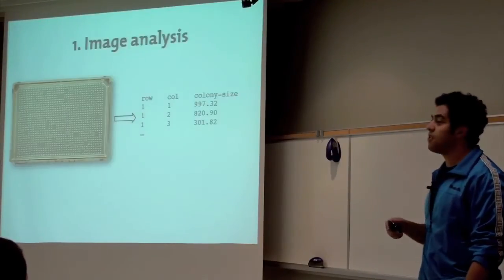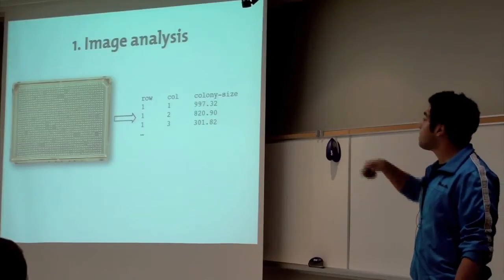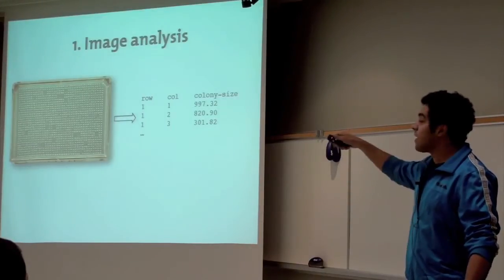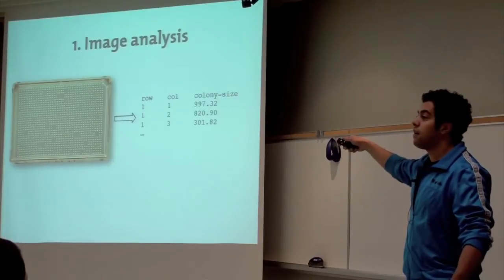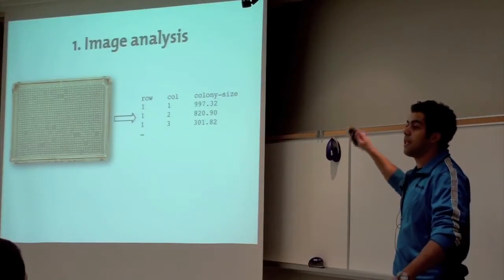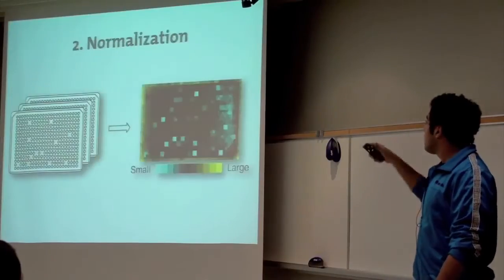And so there's really three key steps in processing these images. The first one is image analysis. So after you get these images, how do you go from something like that to a data file where you have row, column, and the size of each colony?